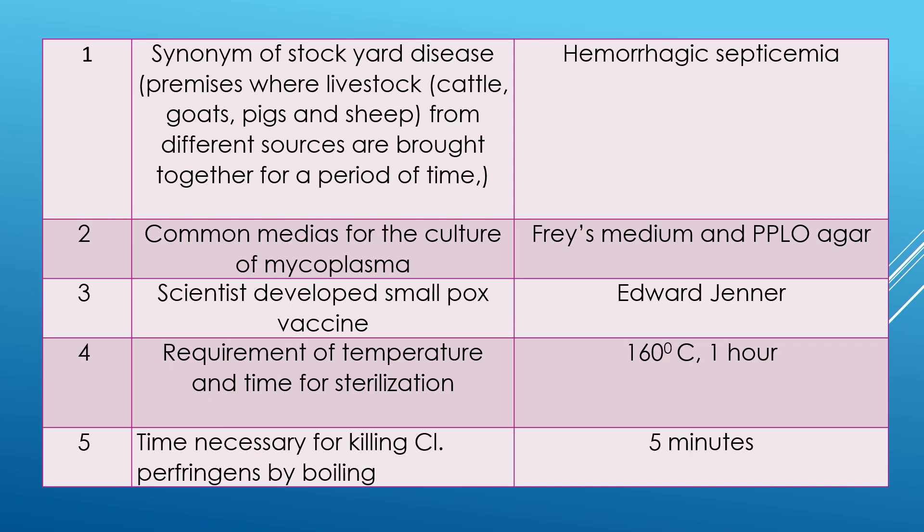Question 1: synonym of Tokya disease. What is Tokya disease? It is a premises where livestock — cattle, goat, pig and sheep — from different sources are brought together for a period of time and come in contact with each other. They are already transported, so that disease occurs. The name of the disease is hemorrhagic septicemia. Tokya means the animals are gathered for slaughter, for mela purpose, for competition purpose, etc.